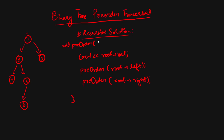Our function is a void pre-order function that takes a TreeNode* root as parameter. If root is null, we return immediately. This is our recursive solution — now let's do a dry run.